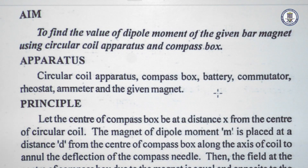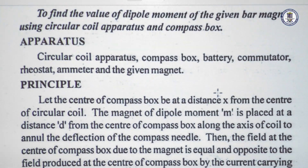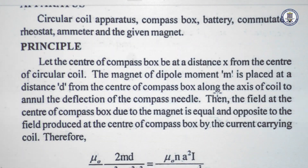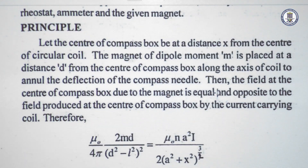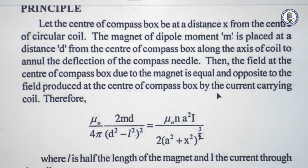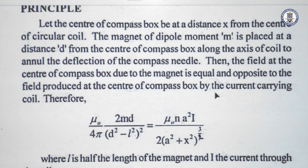When the circular coil is arranged such that the plane of the coil is along the magnetic meridian, and a current i is passing through the circular coil having n number of turns, it produces a magnetic field of strength given by: mu-zero times n times a-squared times i, divided by 2 times (a-squared plus x-squared) raised to the power three-halves, where i is the current, n is the number of turns, a is the radius of the coil, and x is the distance along the axis.